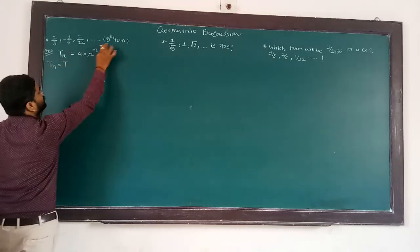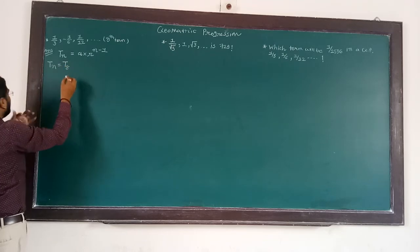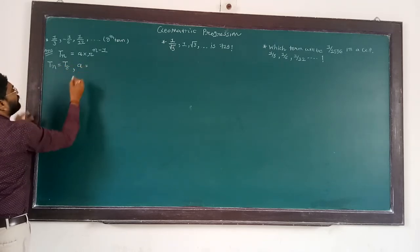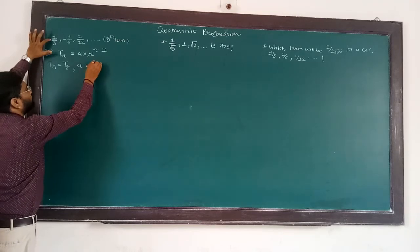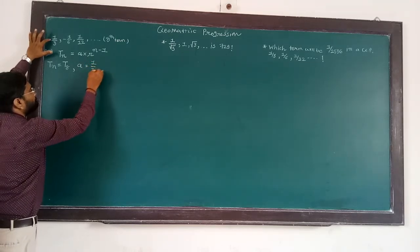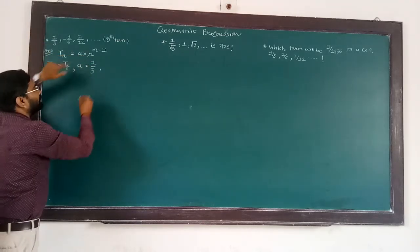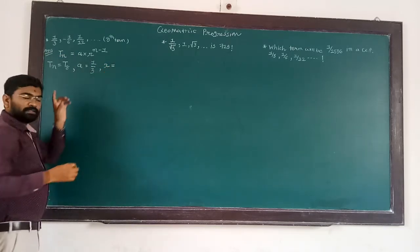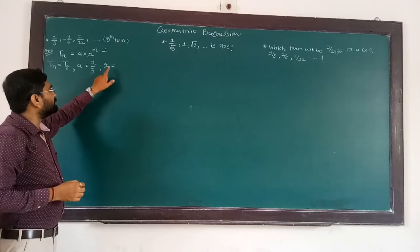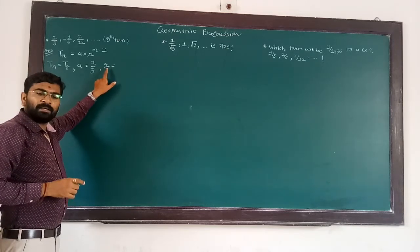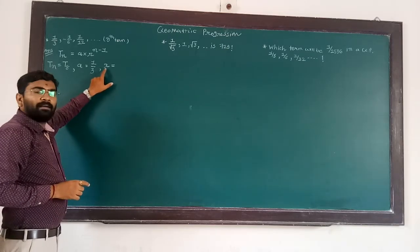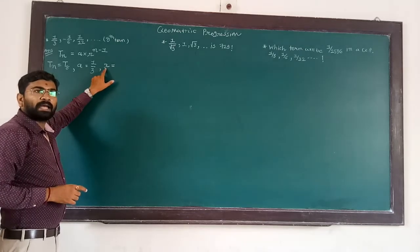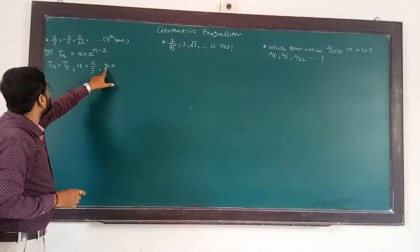Here, the given value is A. So we write T_N is equal to A. A means the first term, and first term means 1 upon 3. Here R — in geometric progression, D means a difference, but here R means the ratio of the second term upon the first term.